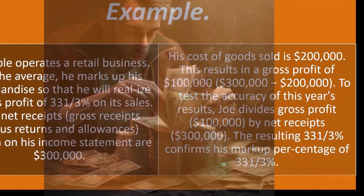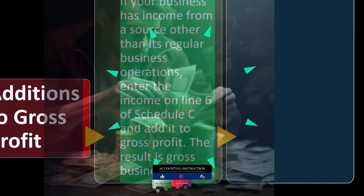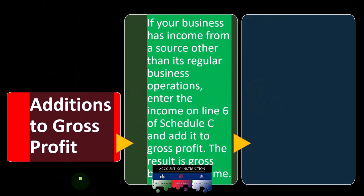To test the accuracy of this year's results, Joe divides gross profit ($100,000) by net receipts ($300,000). The result is 33 and one-third percent, which confirms his markup percent. In this example, it's exact — meaning he maintained consistent markup percents throughout the entire year and sold everything at a constant rate. It's not a perfect system, but it gives a useful general check.